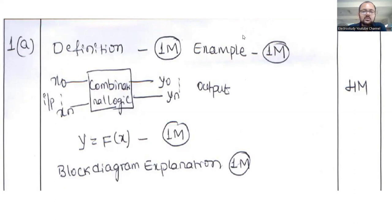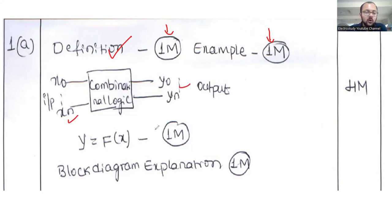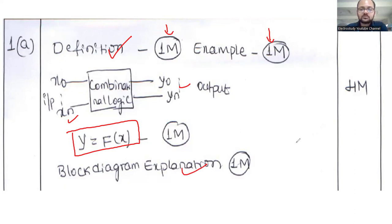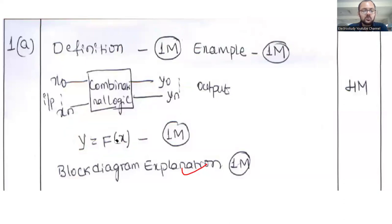This is the basic structure of a combinational circuit. Write down the definition, which carries one mark, then mention one or two examples. A combinational circuit has inputs x0, x1, x2 up to xn, and outputs y0, y1, y2 up to yn. The relation is y = f(x). Draw the simple block diagram with explanation. Total marks awarded for this question is 4.